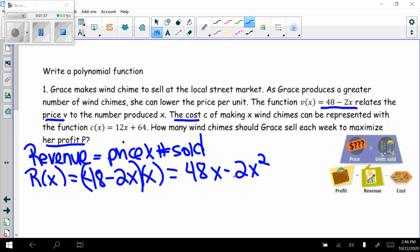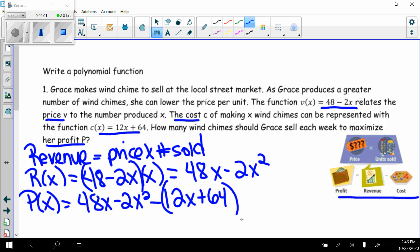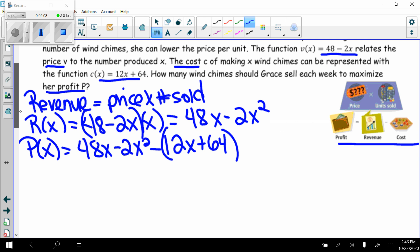So there's my revenue. My profit, P(x), it tells me profit is revenue minus cost. So my revenue, 48x - 2x², minus the cost, which they gave me, 12x + 64. It's minus that whole thing.